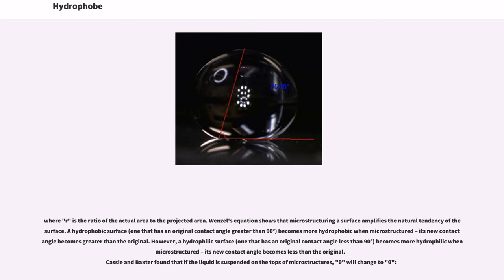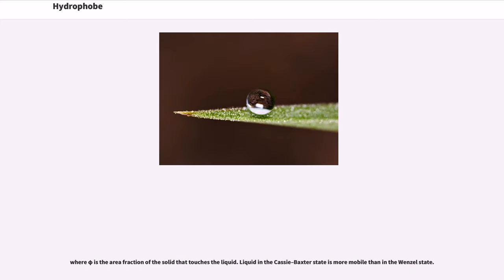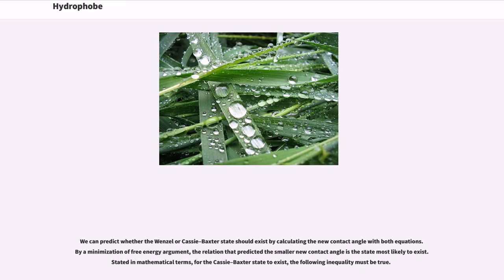Cassie and Baxter found that if the liquid is suspended on the tops of microstructures, theta will change to theta CB, where phi is the area fraction of the solid that touches the liquid. Liquid in the Cassie-Baxter state is more mobile than in the Wenzel state.